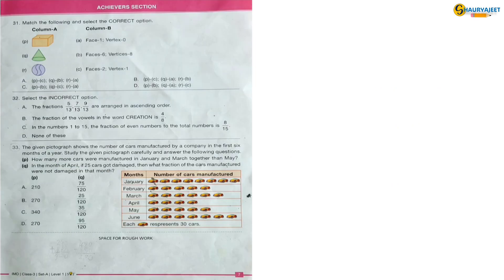Let's move to the hardest and last section, Achievers Section. Question 31: Match the following and select the correct option. As you all know, cube has 6 faces and 8 vertices, cone has 2 faces and 1 vertex, and ball has 1 face and 0 vertex. So the correct option is option C.